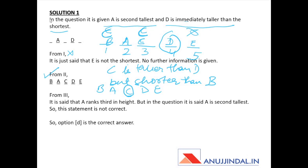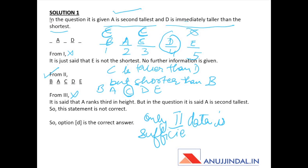For Data 3: it states A ranks third in height, but the question already states A is second tallest — so Data 3 is incorrect. Only Data 2 is correct and individually sufficient. The answer is option D: only the second data is sufficient to solve the question.